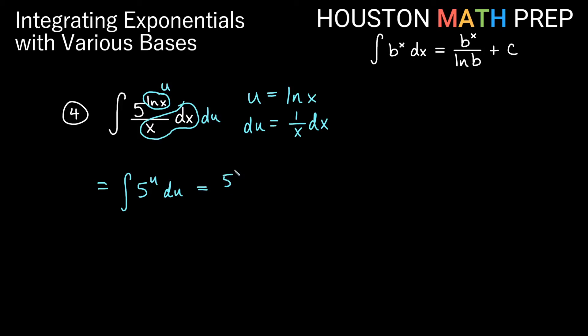And if we use our definition up here, then that gives us 5 to the u over ln of our base, so over ln of 5 plus c. And if we go back and replace our u as ln x, then we'll have 5 to the ln of x divided by ln of 5 plus c.